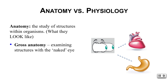Anatomy is the study of structures within an organism — it's what they look like. Gross anatomy is studying structures that we can see with our naked eye, for example surface anatomy, studying the outside of the body, or studying structures on the inside of the body, like organs such as the heart or the stomach.